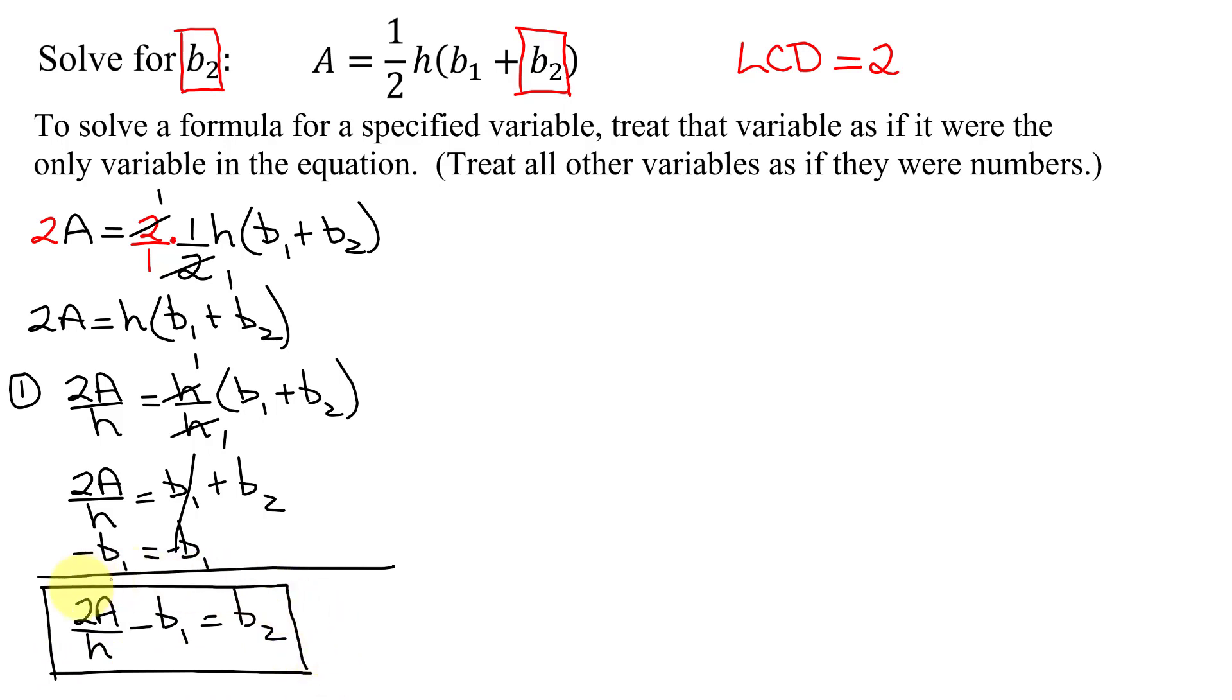So that is one method of solving this problem. The second method starts at this step of 2A equals h times the quantity b1 plus b2.